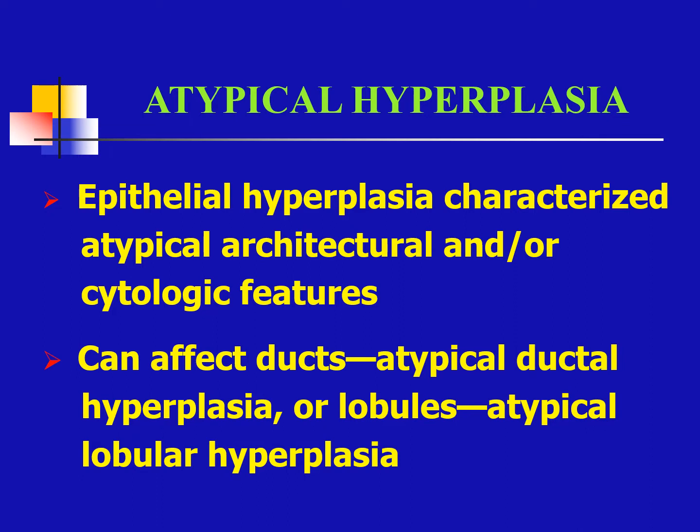Then we have atypical hyperplasia. This is epithelial hyperplasia characterized by atypical architectural and/or cytologic features. This can affect either the ducts — atypical ductal hyperplasia — or your atypical lobular hyperplasia.